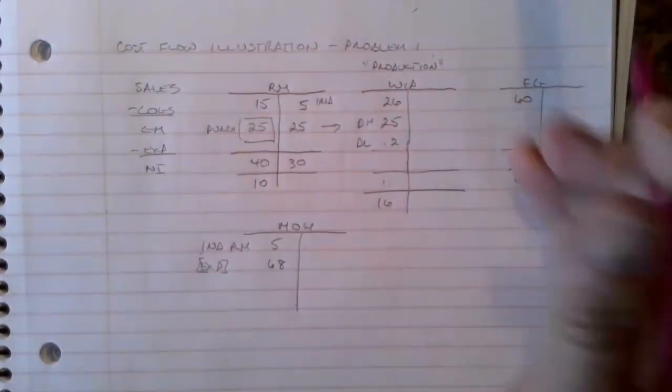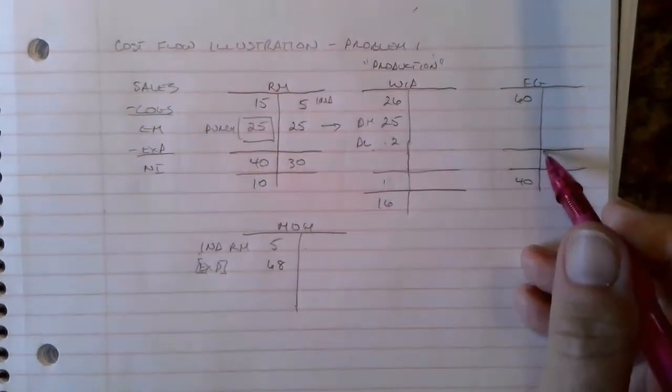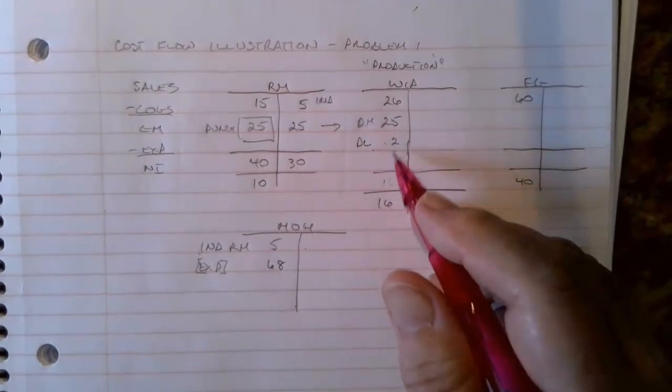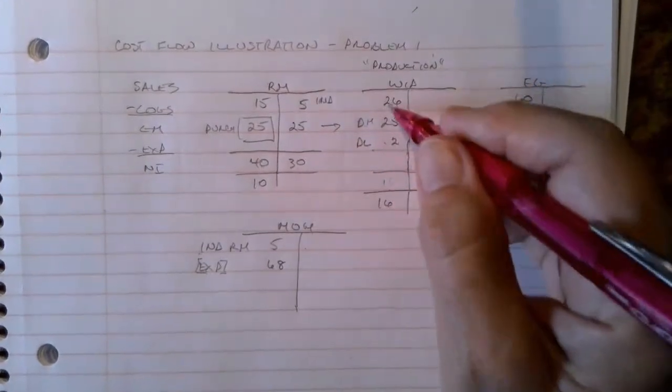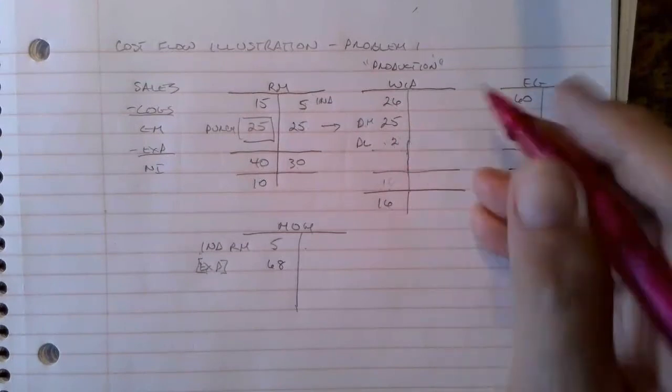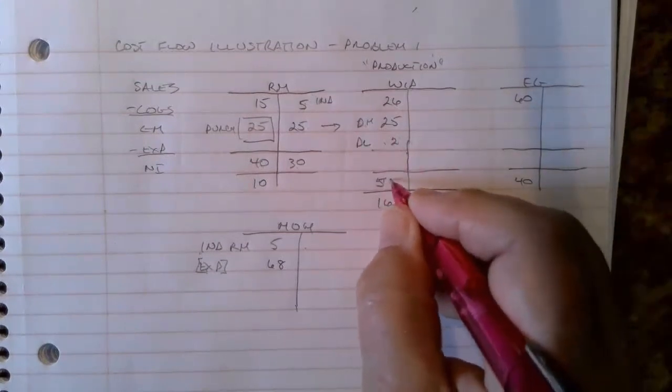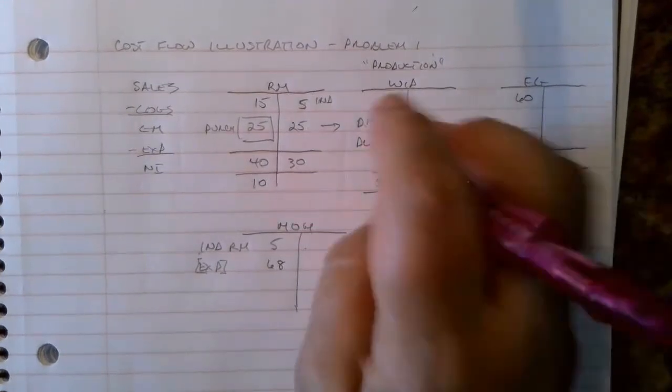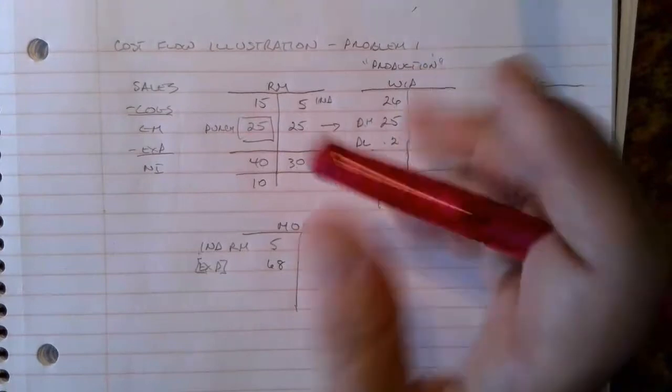And for work in process, we know that I've got an ending balance of sixteen dollars here. My total input was fifty-one, fifty-two, fifty-three dollars. Fifty-three and my ending balance is... oh no, no, no, no, no. We didn't put our overhead in.